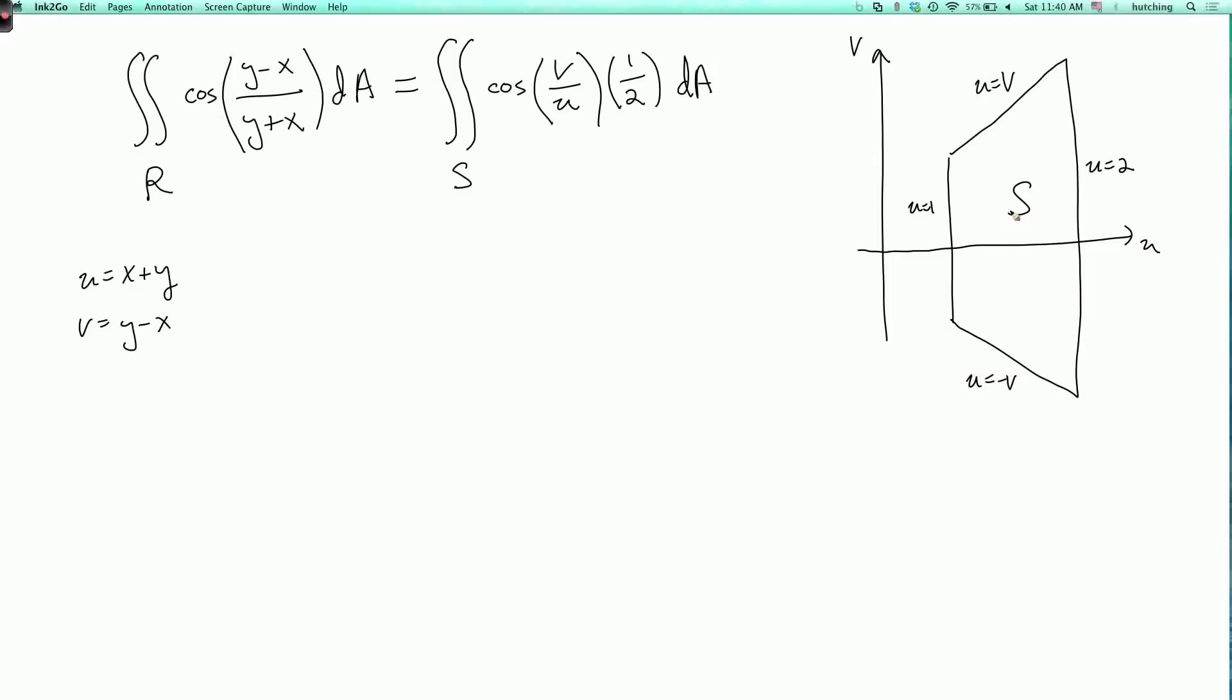Now, we can integrate over v first or over u first, which do you think is going to be easier? Well, let's integrate over v first, because then u is like a constant, so we're basically integrating cosine of v. So this is the integral as u goes from 1 to 2, and v goes from minus u to u of 1 half, cosine of v over u, dv du.